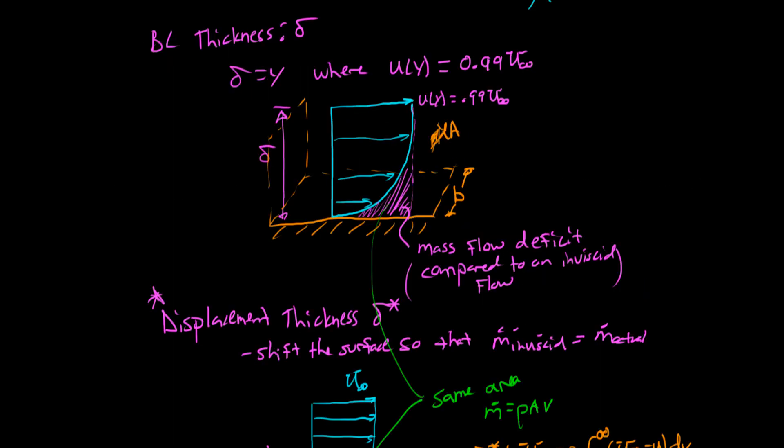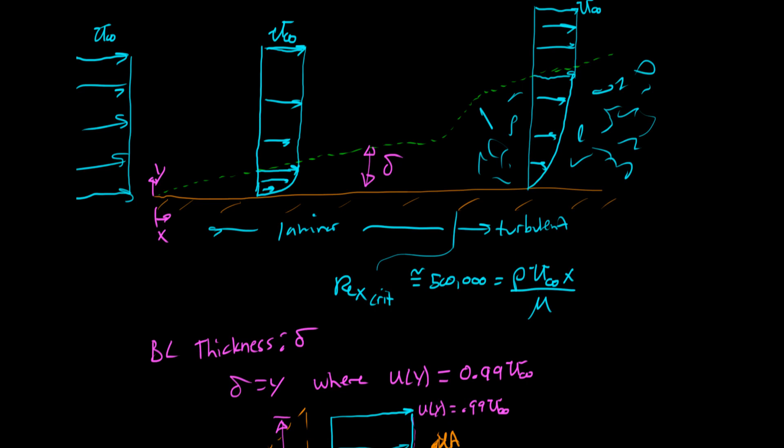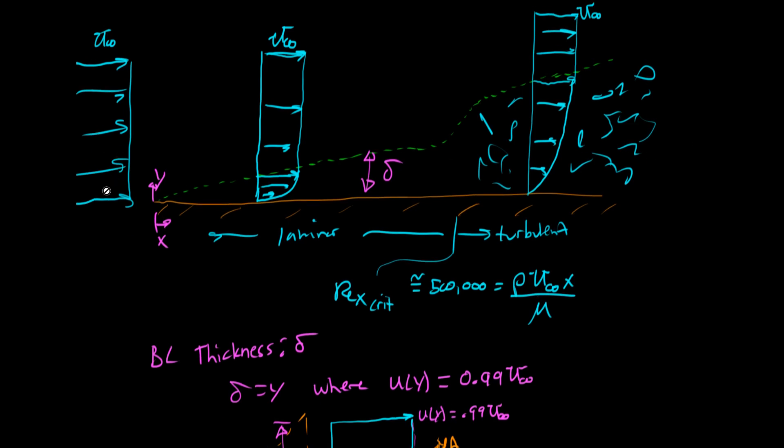So let's start with the idea of a boundary layer forming over a flat plate. The flow may approach at some upstream velocity we're calling u infinity here. That's kind of standard notation. So this is some uniform profile hitting this plate. And as soon as we touch it, we know the no-slip condition causes the fluid touching it to stick and not move anymore.